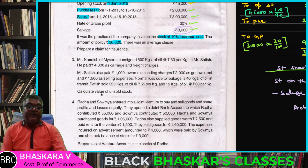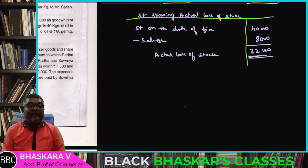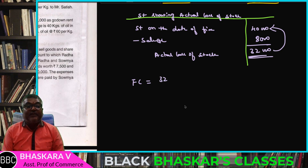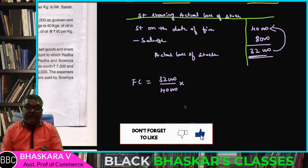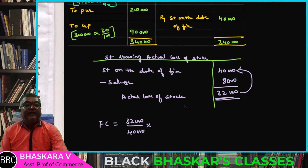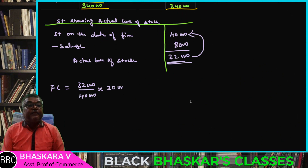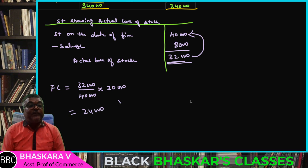Policy amount is 30,000. Fire claim formula: fire claim equals actual loss of stock divided by stock on the date of fire, multiplied by policy amount. Actual loss of stock: 40,000. Policy amount: 30,000. So fire claim = 40,000 divided by... giving 24,000.